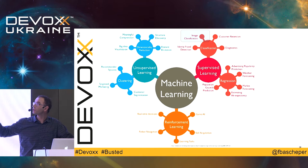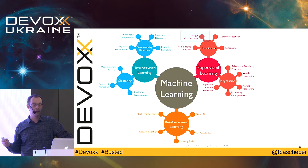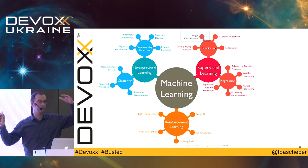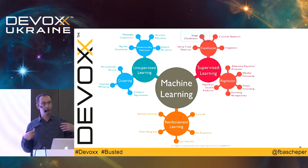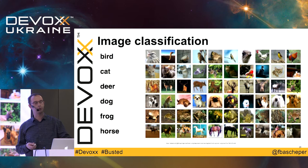Machine learning is a pretty big topic. The thing I'm concerned with is image classification, which is a part of supervised learning. The idea is that you have a dataset you use to train your model on. For example, with a thousand images, you use maybe 70% for training and 30% for validation. In the end, you get the model you can use in your application. You tell it which image class a given image belongs to and keep training until your validation is good enough.